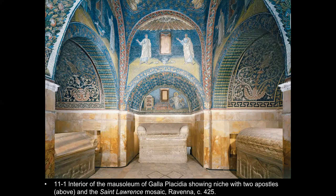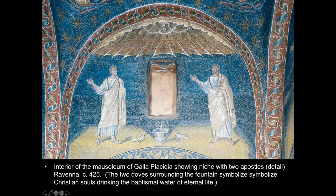We're looking at the interior of the Mausoleum of Galla Placidia in Ravenna, showing a niche with two apostles in the Saint Lawrence mosaic from the 5th century. Some symbols used by ancient Romans are repurposed here: two doves surrounding a fountain symbolize Christian souls drinking the baptismal water of eternal life. Doves also represent the Holy Spirit — God's presence in the world — something we'll get into in more detail later.